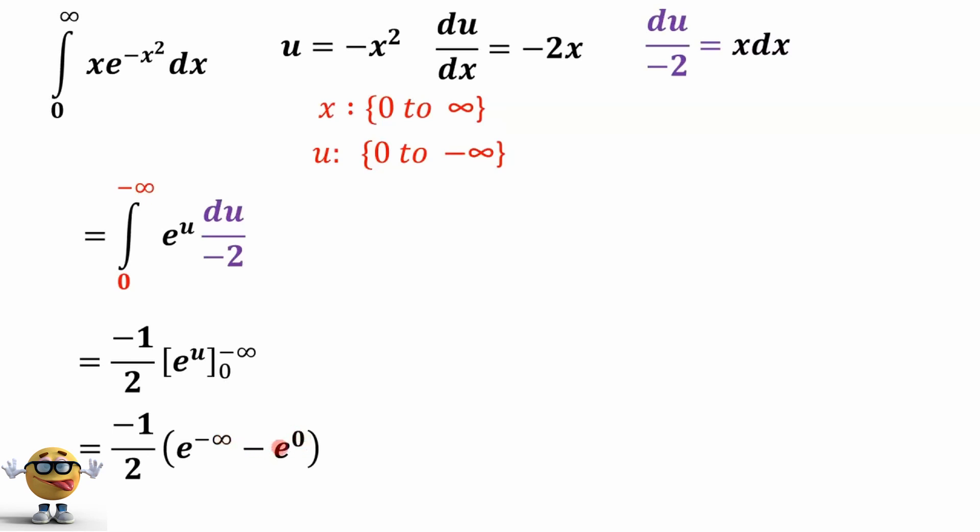Now, this is just 1. And this left term becomes 0. So if this is 1, this is negative 1 becomes positive 1 half. And that's our integral right there.